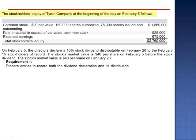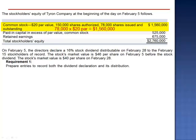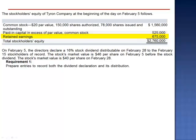Exercise 7. The stockholders' equity of Tyron Company at the beginning of the day on February 5th follows. Common stock, $20 par value, 150,000 shares authorized, of which 78,000 shares are issued and outstanding. 78,000 shares multiplied by the $20 par value explains the balance in common stock: $1,560,000. Paid-in capital in excess of par value, common stock: $525,000. Retained earnings balance: $675,000. Total equity: $2,760,000.